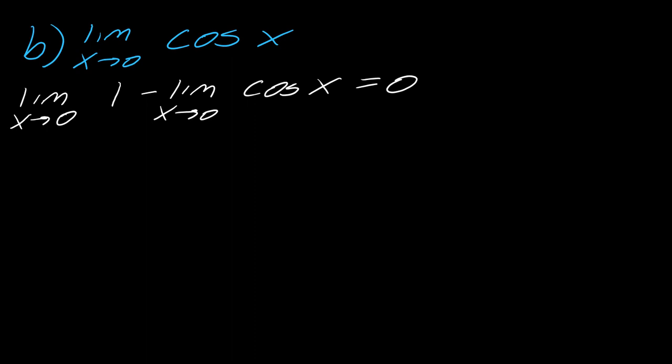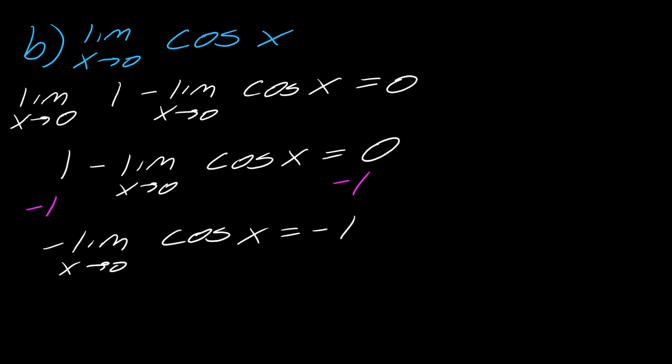So evaluating this one more time, the limit of any constant is just going to be the constant itself. So this will mean that 1 minus the limit as x approaches 0 of the cosine of x equals 0. And now I can just do a little bit of algebra on this. So I can subtract the 1 from each side to get that the negative limit as x approaches 0 of the cosine of x will equal negative 1. Divide both sides by negative 1. Therefore, we can conclude that the limit as x approaches 0 of the cosine of x will actually equal 1.